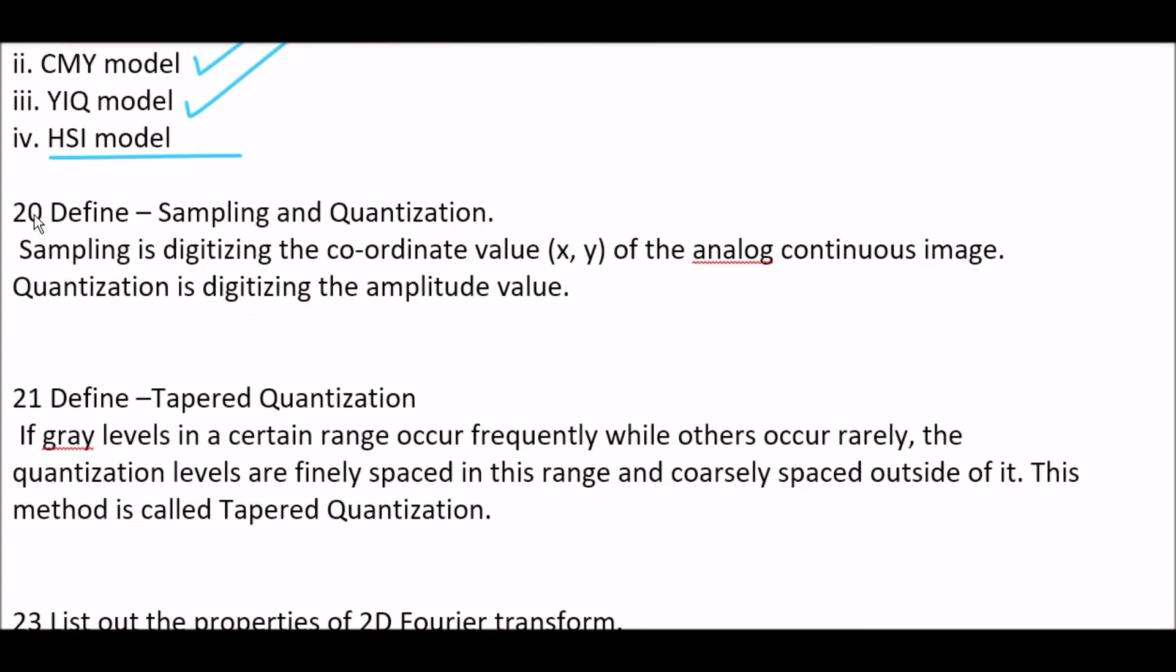Next question. Define sampling and quantization. Answer is, sampling is digitizing the coordinate value X and Y of the analog continuous image. Quantization is digitizing the amplitude value.